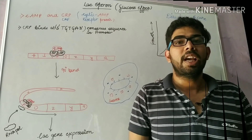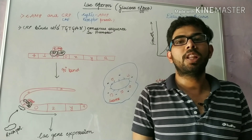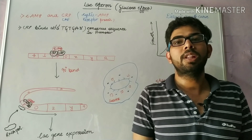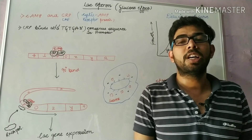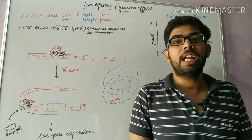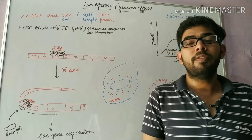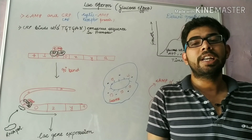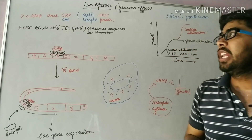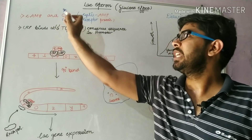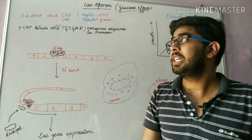Good morning everyone. As I have provided you two videos about the lac operon, this is my third video which tells about the glucose effect in lac operon. Before proceeding further, we will understand how cyclic adenosine monophosphate and CRP or CAP protein regulate gene expression.